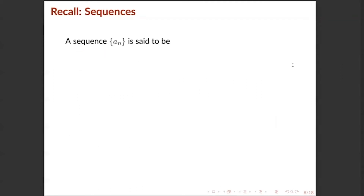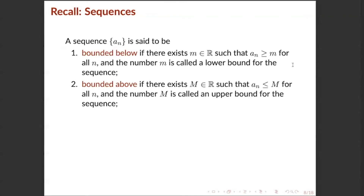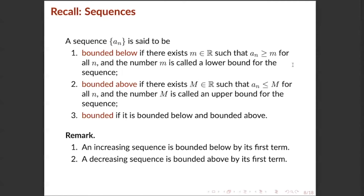A sequence {a_n} is said to be: (1) bounded below if there exists m ∈ ℝ such that m ≤ a_n for all n, and m is called a lower bound; (2) bounded above if there exists M ∈ ℝ such that a_n ≤ M for all n, and M is called an upper bound; (3) bounded if it is both bounded above and bounded below. Remark: an increasing sequence is bounded below by its first term, while a decreasing sequence is bounded above by its first term.